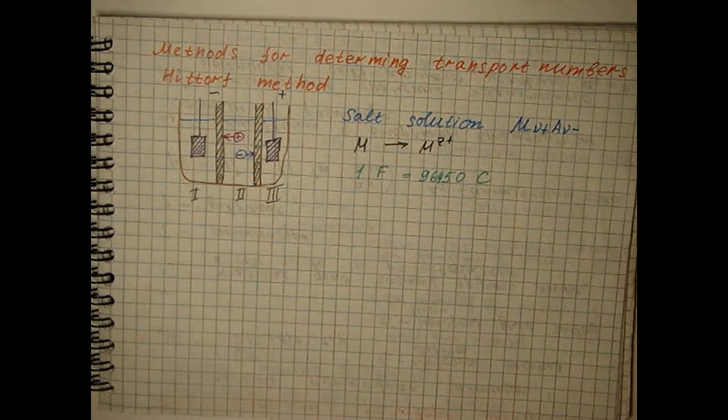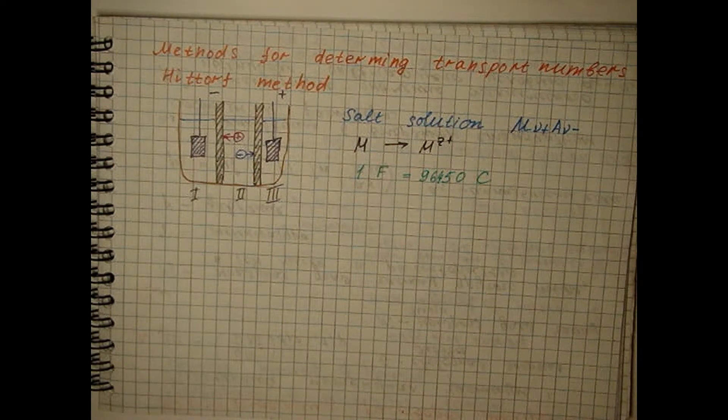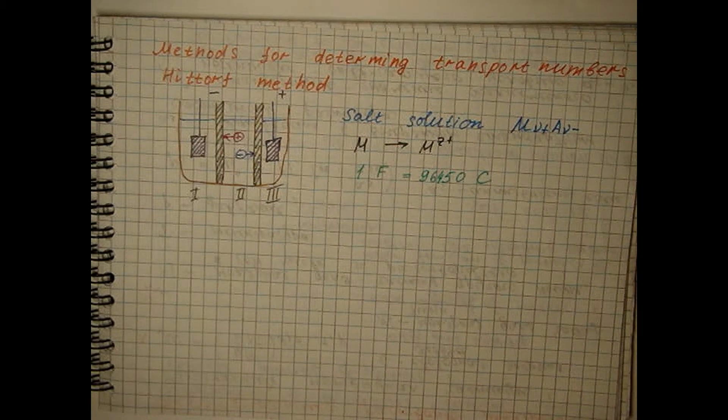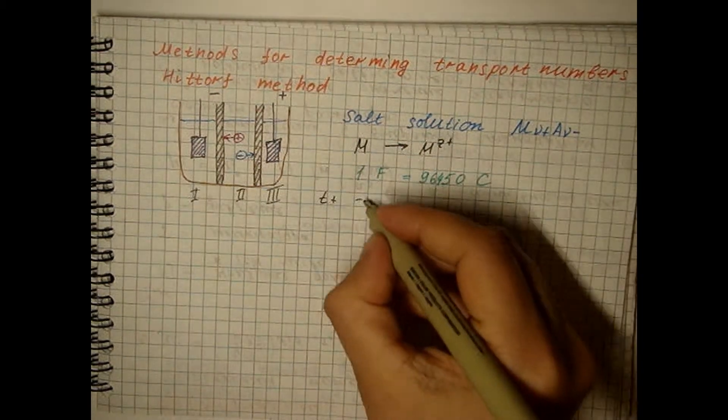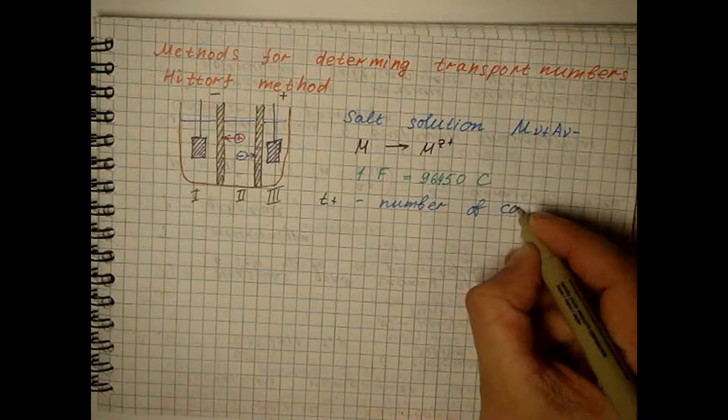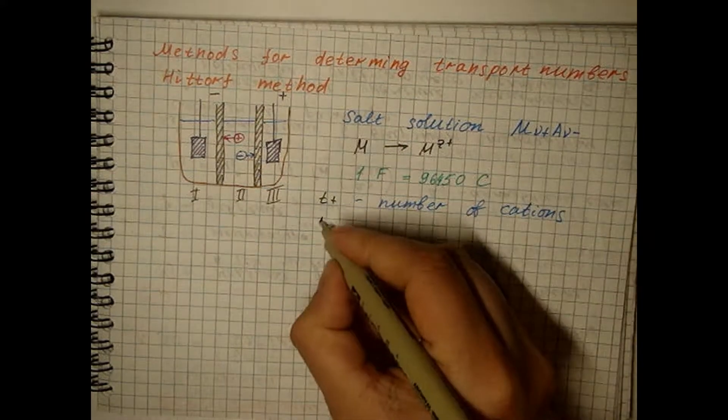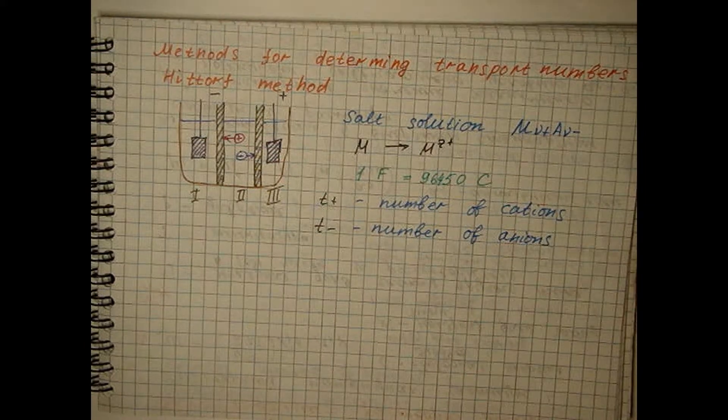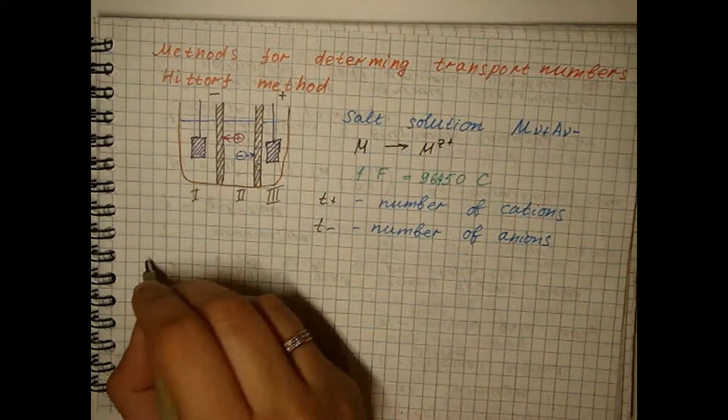In accordance with Faraday's law, one gram equivalent of cations is discharged at the cathode. Then, through a porous wall, a certain number of cations will enter in the first compartment from the middle compartment. And a certain number of anions will leave it in the middle compartment. The total balance of cations in compartment one is...